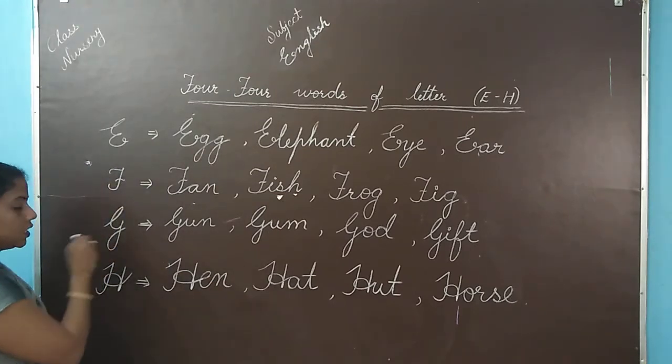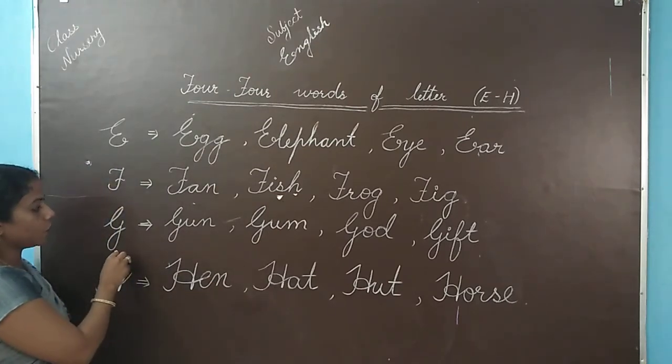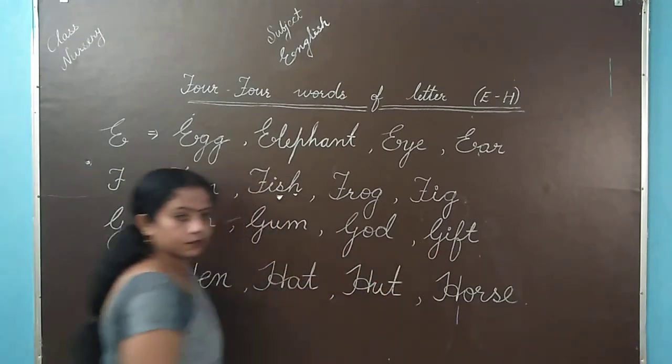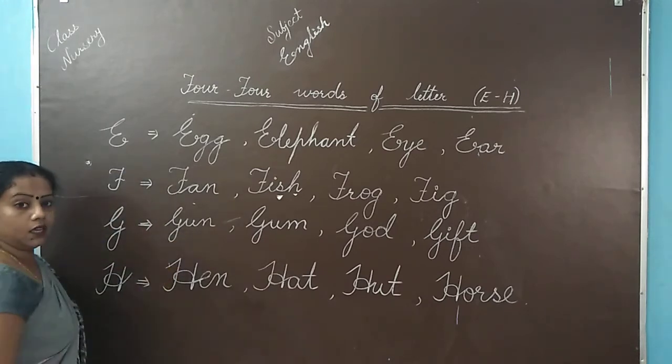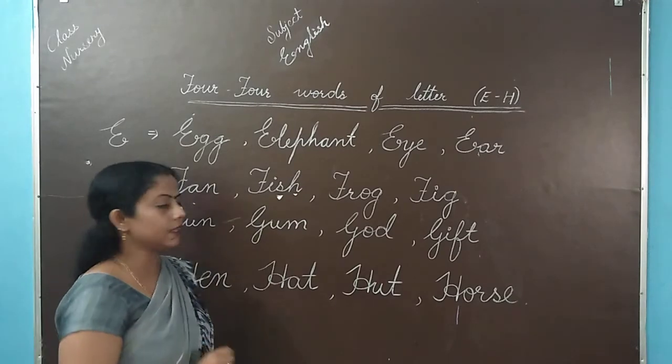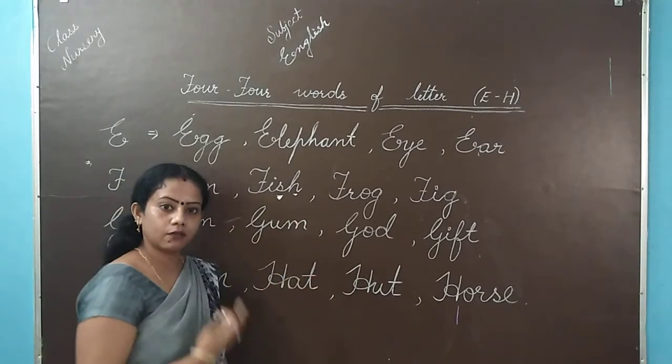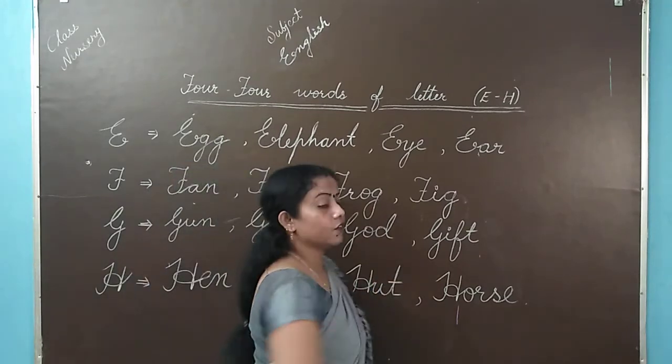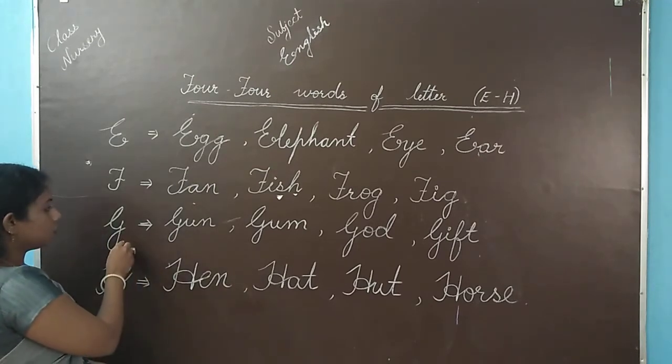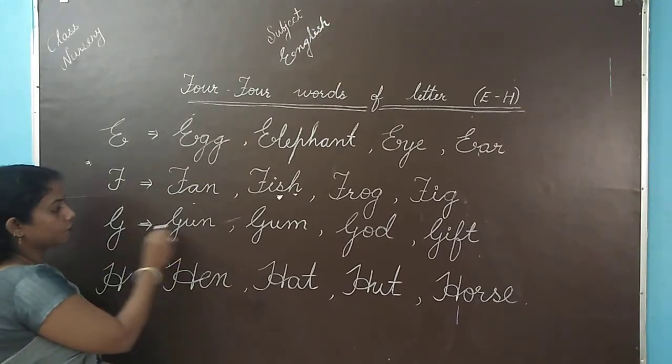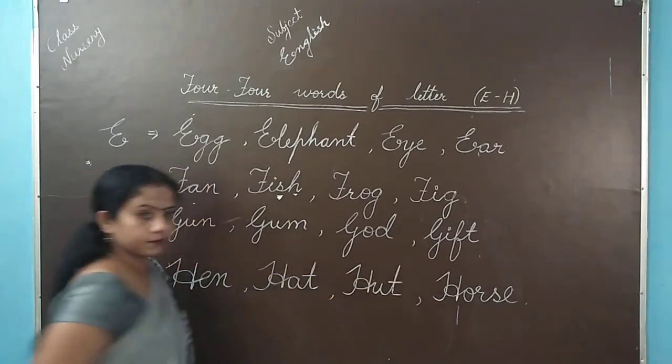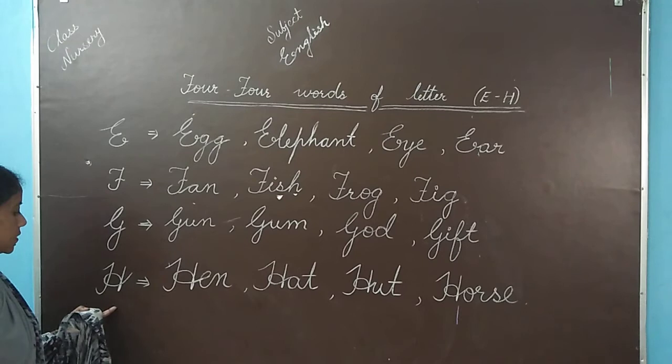Next, G. G for gun, gum, god, gift. Gun yani bandook, gum yani gond, jisse hum chipkane mein kaam lete hain. God, God yani Bhagwan, gift. Gift yani uphar, tohfa. G for gun, G for gum, G for God, G for gift.